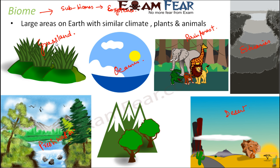Now you understand the concept of ecology and why ecology exists at all these levels: at the organism level, where one organism interacts with another; at the population level, where a population interacts with the population of another organism; at the community level, where different species of organisms interact with each other; and at the biome level, where different organisms interact with other animals, plants, and even with the non-biotic components.